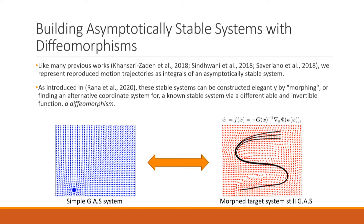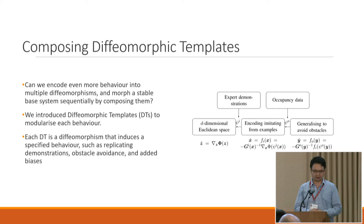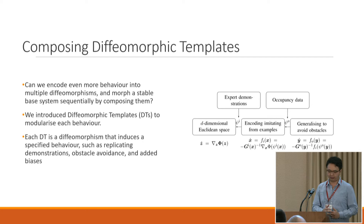A nice way to do this, introduced in Rana et al. 2020, is that if you have a system that you know is asymptotically stable, you can use a differentiable and invertible function known as a diffeomorphism to essentially morph this and preserve the stability properties. The natural question is: apart from learning, can we encode even more behavior into multiple diffeomorphisms by sequentially composing them and morphing some known stable system into something useful for generalized imitation learning?